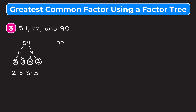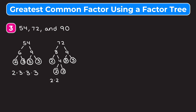Now let's make a factor tree for 72. I'm going to break it up into eight and nine. Neither of these are prime, so I break eight into two times four. Two is prime, so I circle it. Four is not prime, so I continue to break it up into two times two — those are prime. Now let's break nine into three times three — three and three are prime, so I circle those. The prime factorization of 72 is two times two times two times three times three.